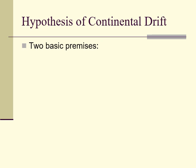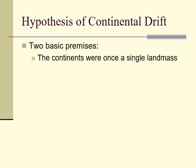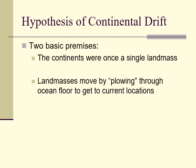So let's talk about this hypothesis of continental drift. We had two basic premises. Number one, the continents were once a single land mass — all the continents fit together at one point. And the land masses must move by kind of plowing their way through the ocean floor in order to get to their current locations.